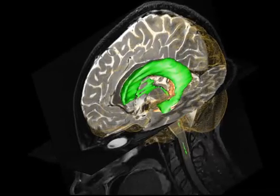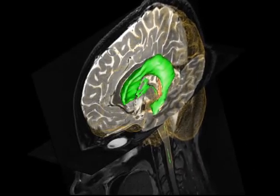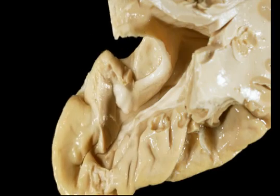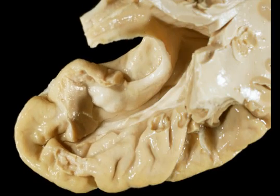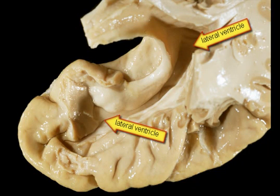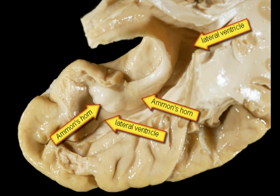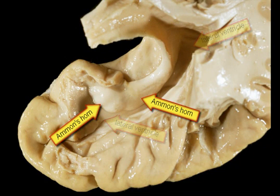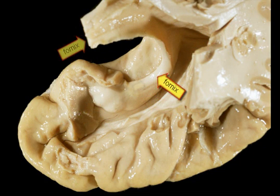Now we exposed the hippocampus in a real brain. You are looking from above and the tip of the temporal lobe is to your left. Note the ventricle and the biggest component which is Ammon's horn. The fiber tract is the fornix.